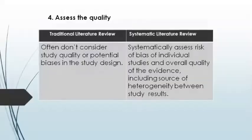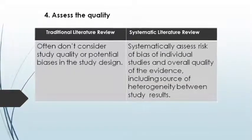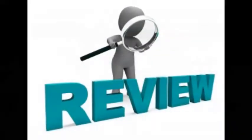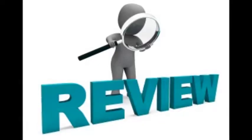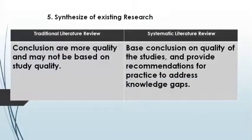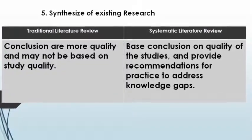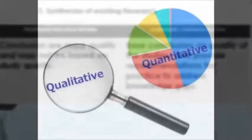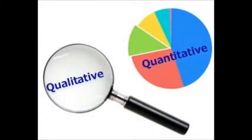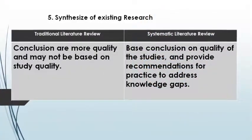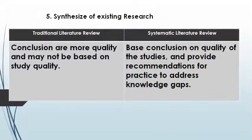The fifth and final difference is the synthesis of existing research. In a traditional literature review, conclusions are more qualitative and may not be based on study quality. In a systematic literature review, conclusions are based on the quality of the studies and provide recommendations for practice, address knowledge gaps, and are totally grounded in the evidence.